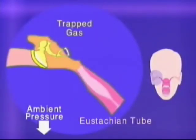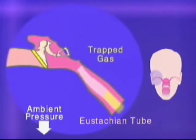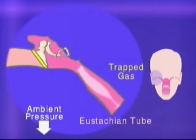That air is intermittently released to the environment through the eustachian tube. The eustachian tube connects the middle ear with the back of the throat.